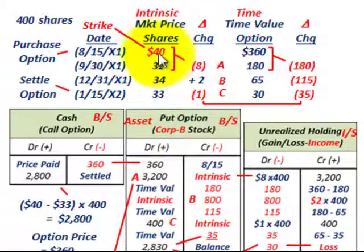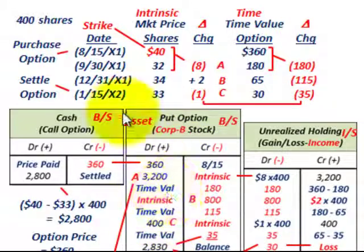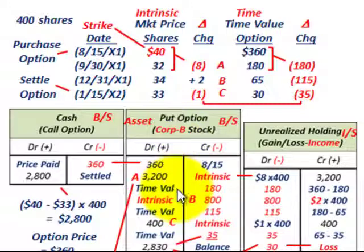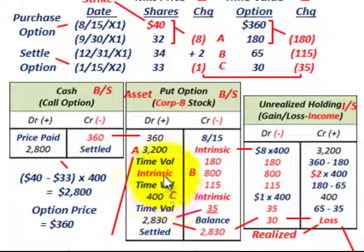Had the market price exceeded our strike price of $40, then the put option wouldn't be exercised and wouldn't have any value. And the other thing is you do have to settle this option before it expires. In this case, it would have expired on 1/31/X2, and we settled it before that — we executed this put option before the expiration date. At the end of the period when you do settle it, you have to come up with your balances.